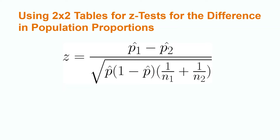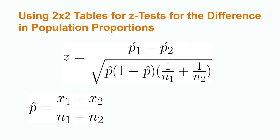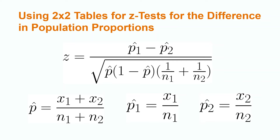Two-by-two tables are also used to calculate the z-test statistic for the difference in population proportions. The formula is z equals p-hat 1 minus p-hat 2, divided by the square root of the quantity p-hat times 1 minus p-hat times the quantity 1 over n1 plus 1 over n2. The formula for p-hat is the quantity x1 plus x2 divided by the quantity n1 plus n2. P-hat 1 is x1 over n1, and p-hat 2 is x2 over n2, where x represents the number of successes.